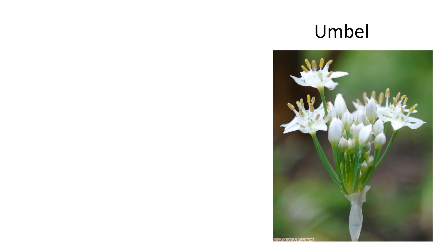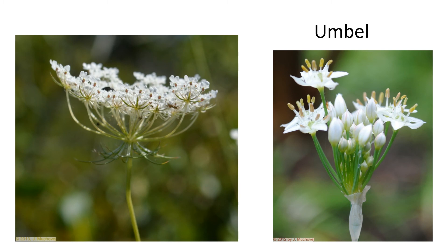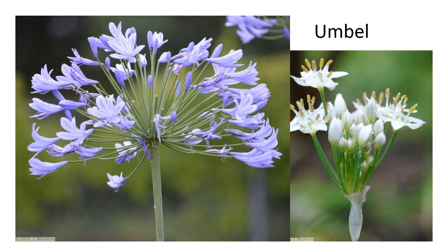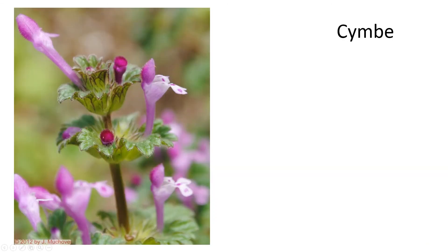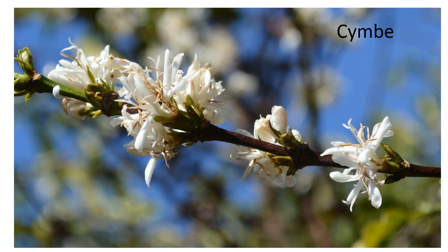Other kinds of groupings occur when the central stalk branches in different ways. The umbel has many secondary stalks radiating out from a single point, providing a kind of flat top. The cyme is somewhat like the umbel, but there is no central stalk and the flowers radiate out as a cluster.